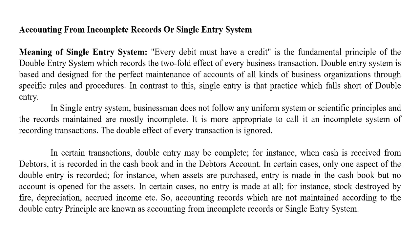Now, every transaction is required. A transaction has two aspects: the debit aspect and the credit aspect. One account is debited and automatically the same amount is credited. For example, cash received from Ditas is recorded in both the cash book and the Ditas account.